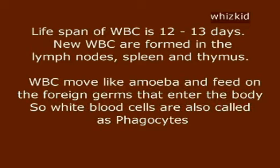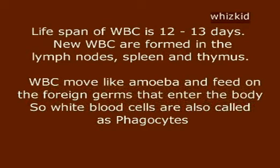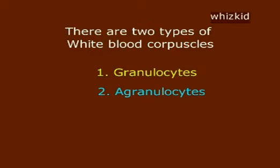New WBCs are formed in the lymph nodes, spleen, and thymus. White blood corpuscles move like amoeba and feed on foreign germs that enter the body, so white blood cells are also called phagocytes.